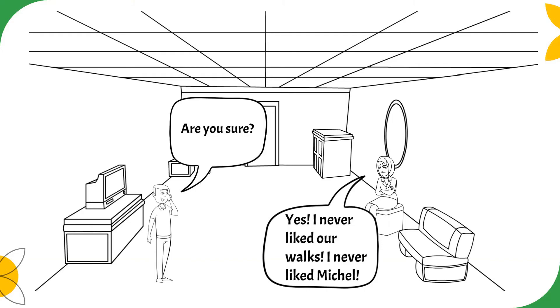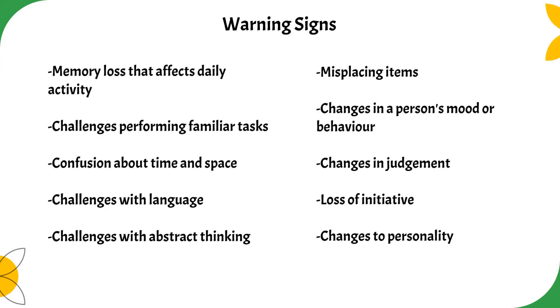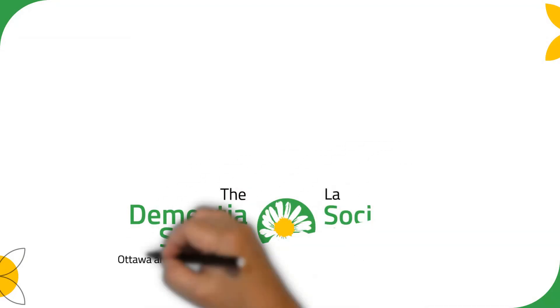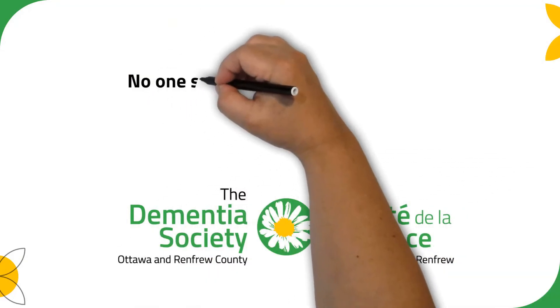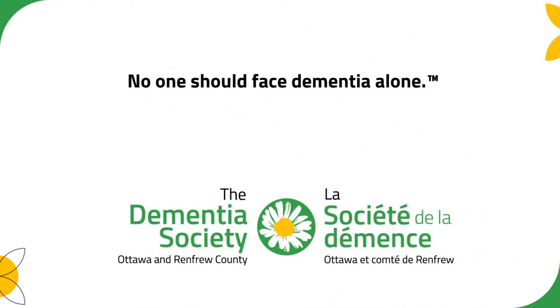While there isn't yet a cure for dementia, there are things you can do to delay its onset and progression. Knowing the signs of dementia can help you recognize it. Recognizing it allows you to connect with the resources that will help you and those you love to think better, act better, and live better.